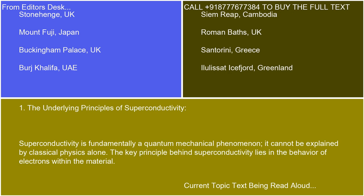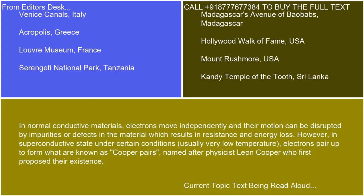The underlying principles of superconductivity: superconductivity is fundamentally a quantum mechanical phenomenon — it cannot be explained by classical physics alone. The key principle behind superconductivity lies in the behavior of electrons within the material. In normal conductive materials, electrons move independently, and their motion can be disrupted by impurities or defects in the material, which results in resistance and energy loss.